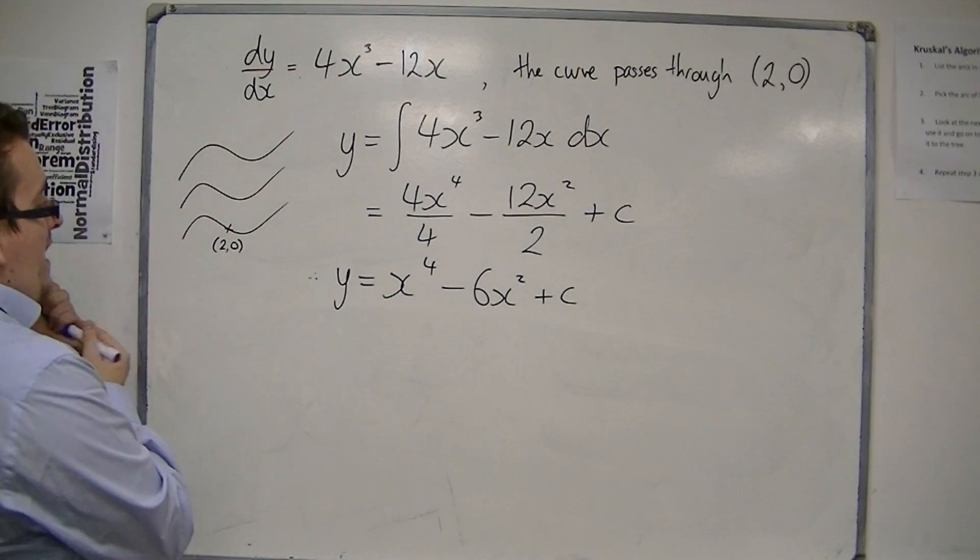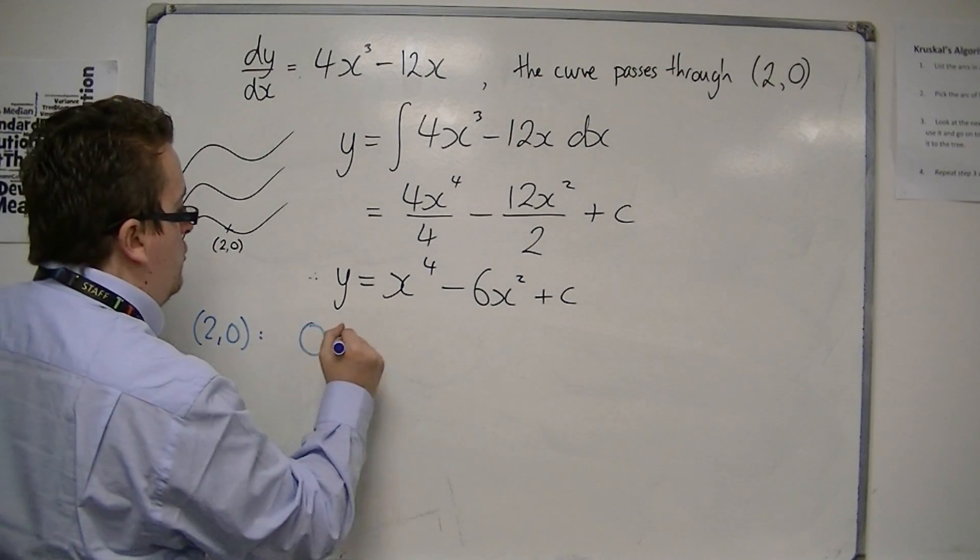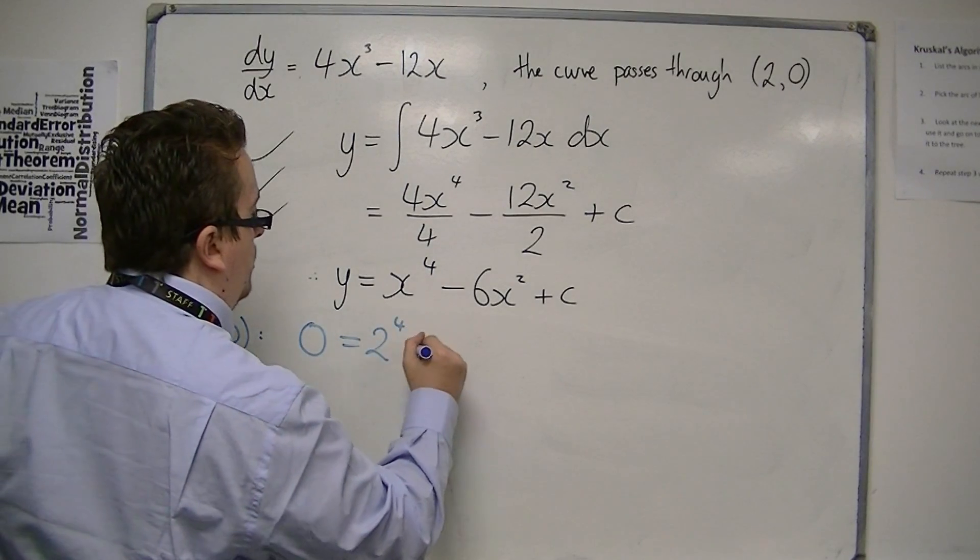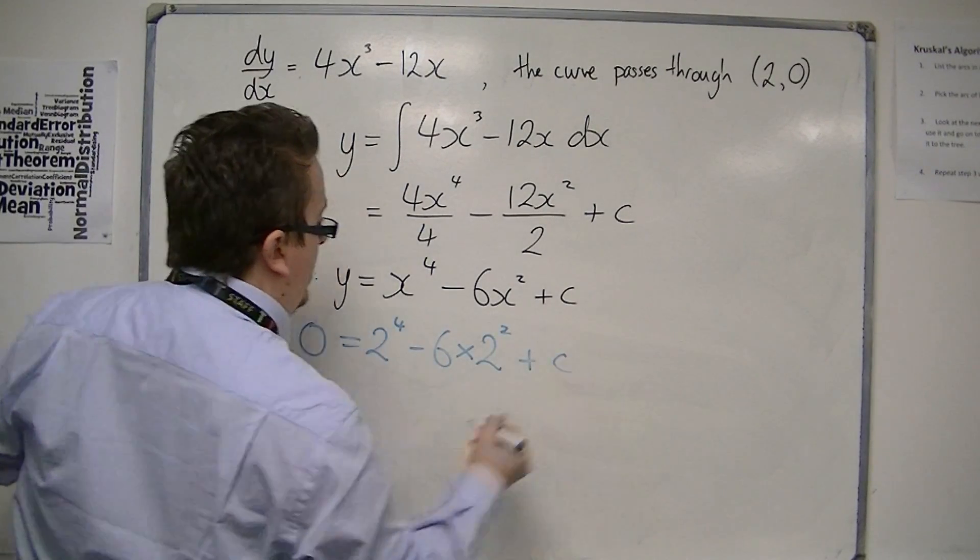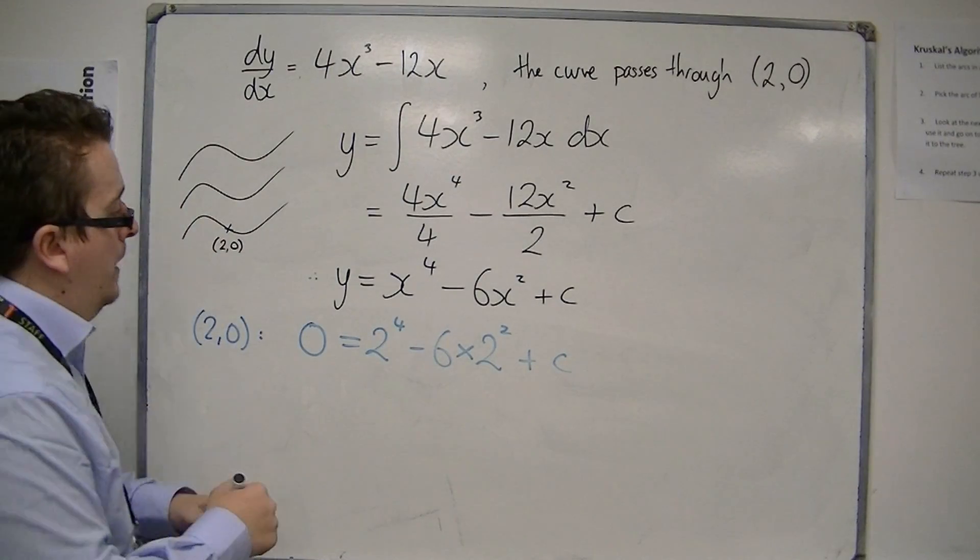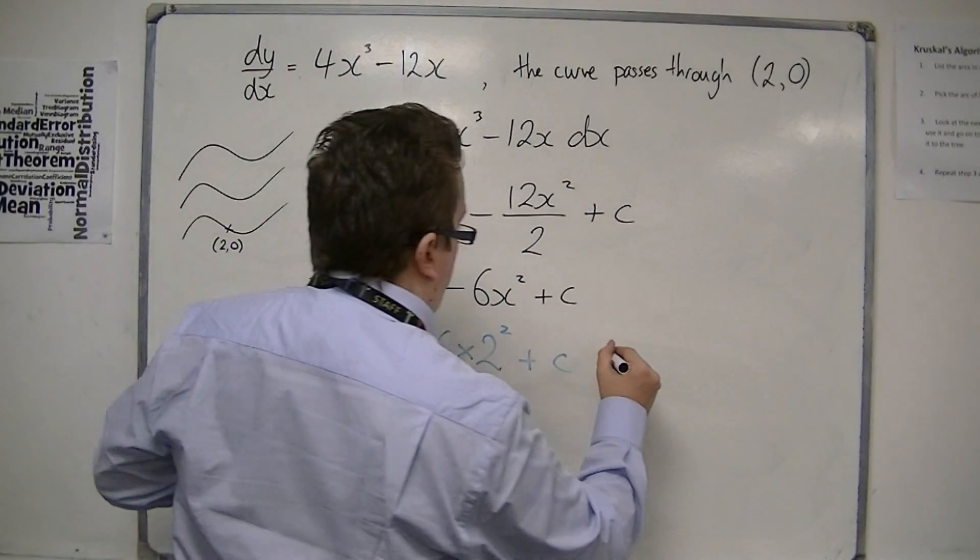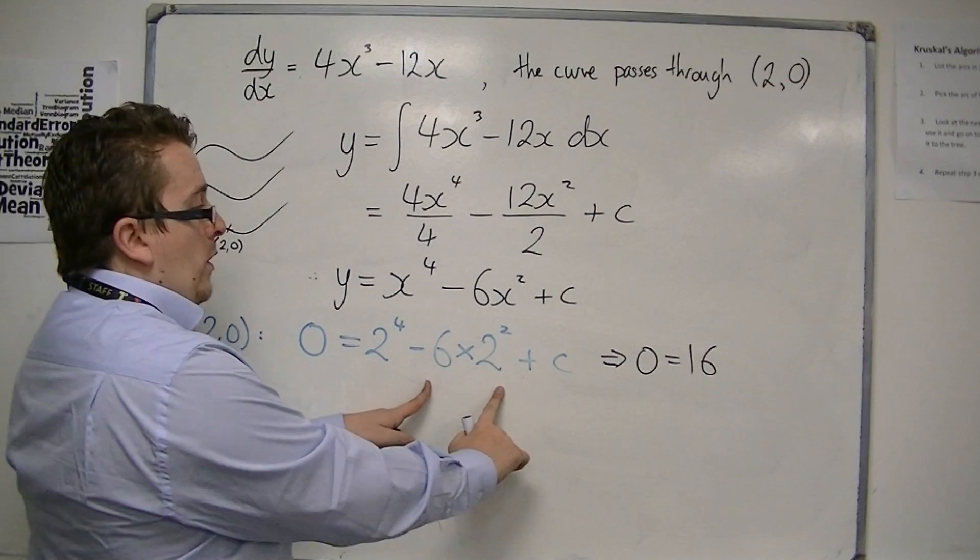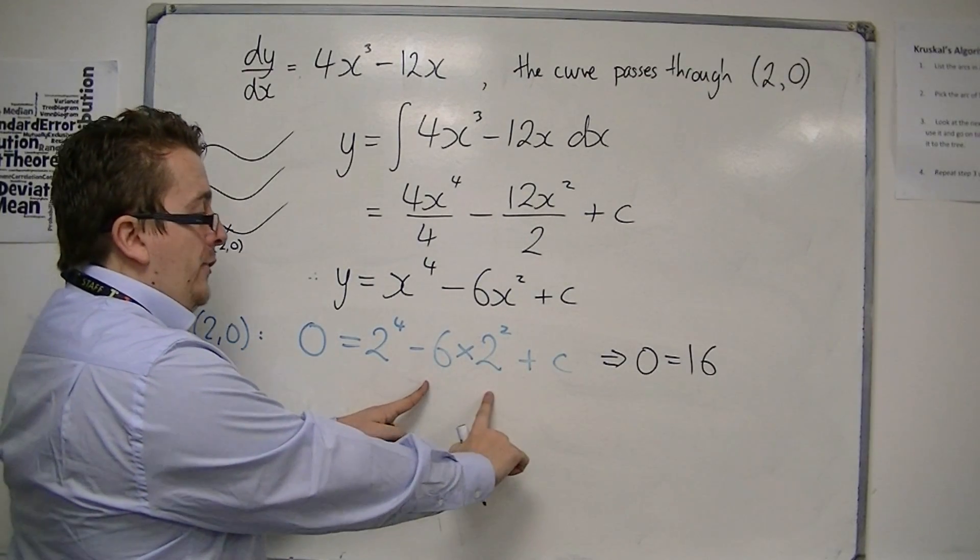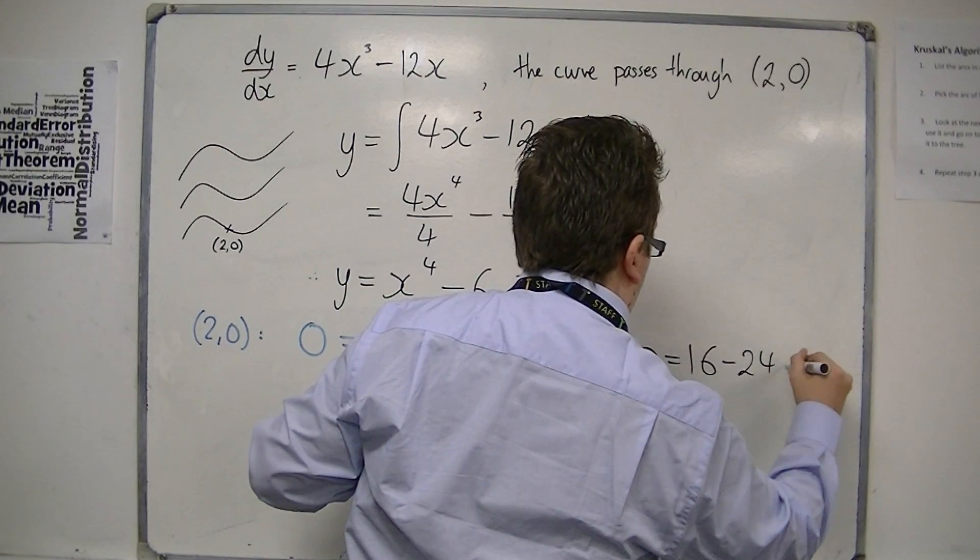When x is 2, y is 0. So we get 0 is 2 to the 4, take away 6 times 2 squared plus c. 2 to the 4 is 16. So we've got 0 is 16, take away, well, 2 squared is 4, so 6 times 4 is 24, plus c.